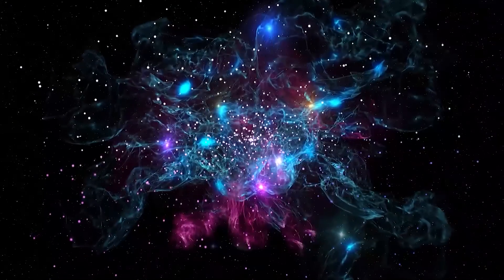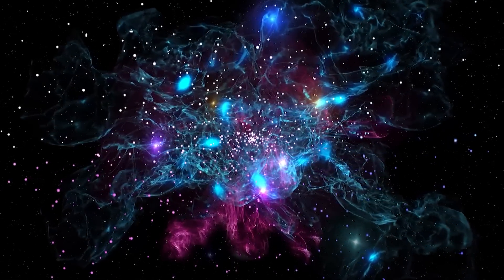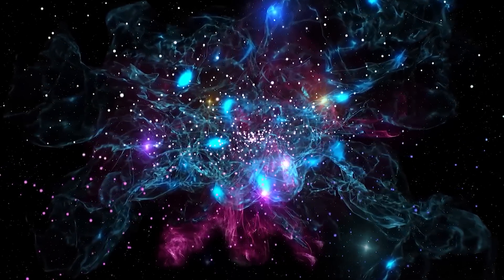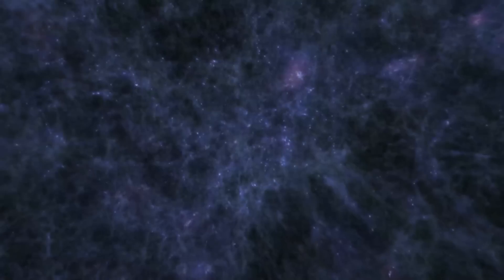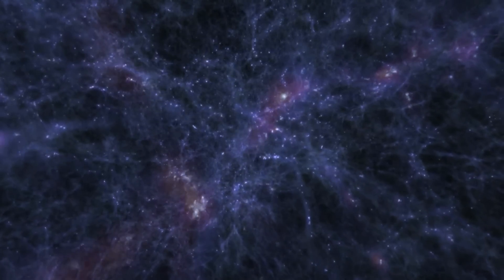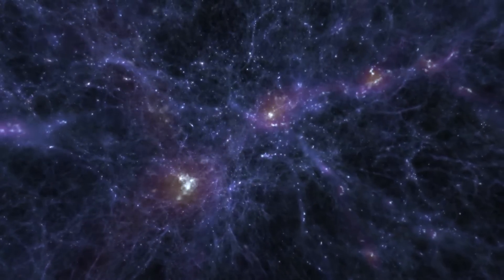Or that the Boötes system is full of intelligent ET life, and they wanted to create a cosmic superhighway so they could travel relatively unimpeded through the void. So all the surrounding systems agreed to start harvesting the matter or energy that was once in the void.